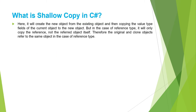In the case of shallow copy in C#, it will create a new object from the existing object and then copy the value type fields of the current object to the new object. But in the case of a reference type, it will only copy the reference, not the referenced object itself. Therefore, the original and the clone object refer to the same object in the case of reference type.